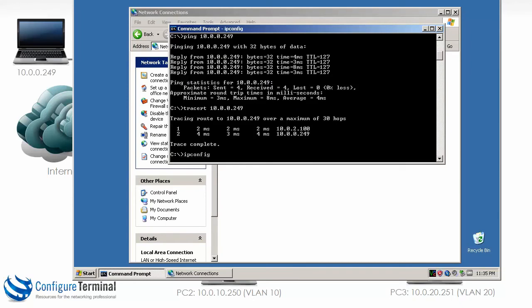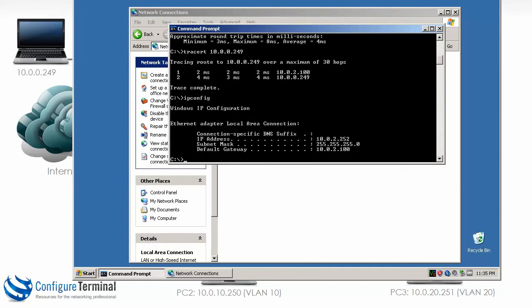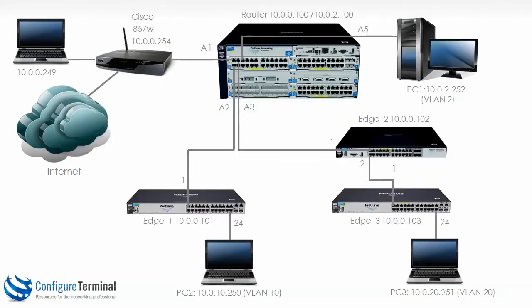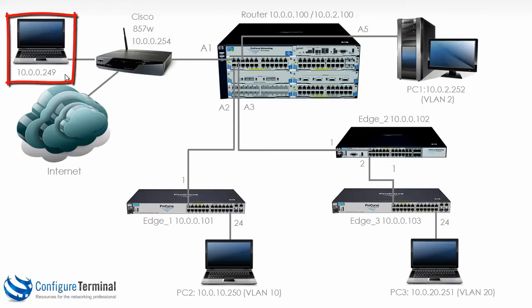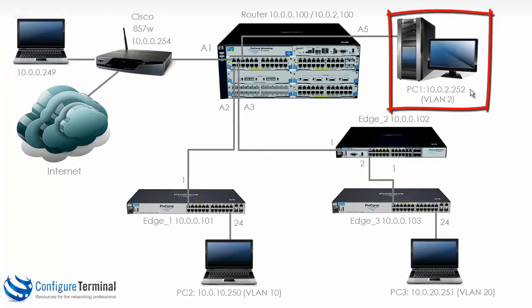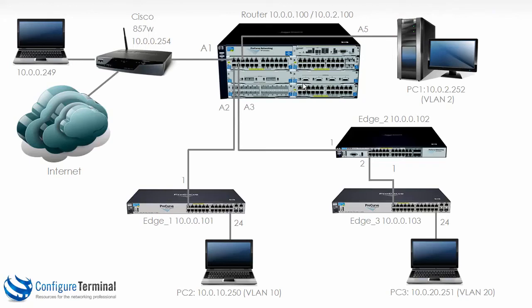Running ipconfig on PC1, you can see its default gateway is 10.0.0.100. So that's how you configure inter-VLAN routing on E-Series devices. We have successfully configured VLAN 2 and put PC1 into VLAN 2, and enabled inter-VLAN routing between our recording PC 10.0.0.249 connected to the Cisco router and PC1. The device doing inter-VLAN routing is the 5406.